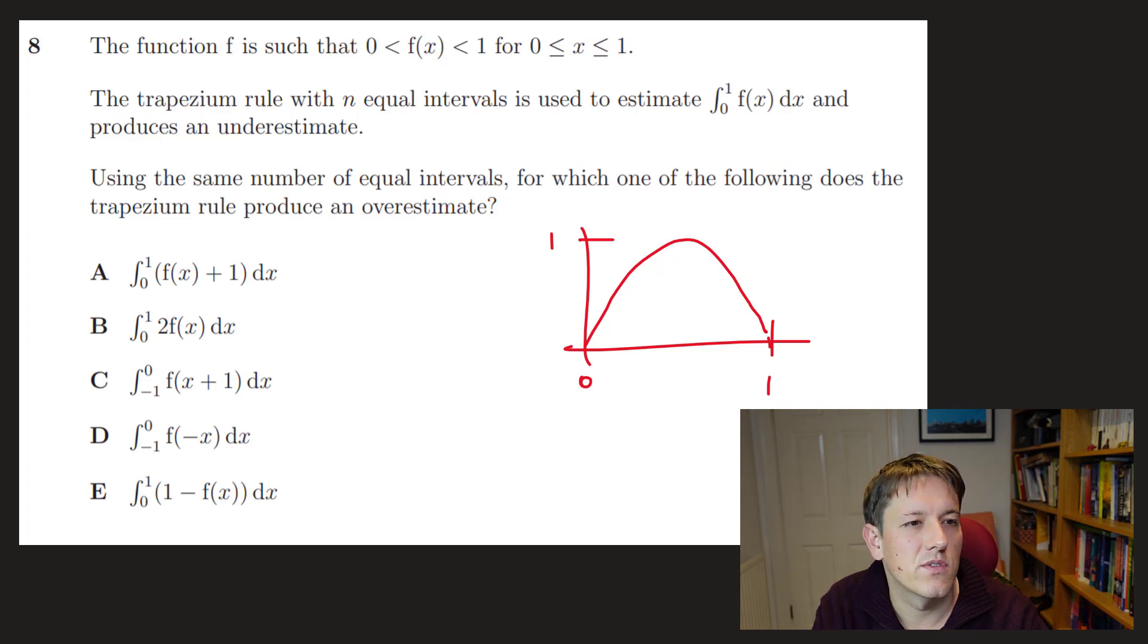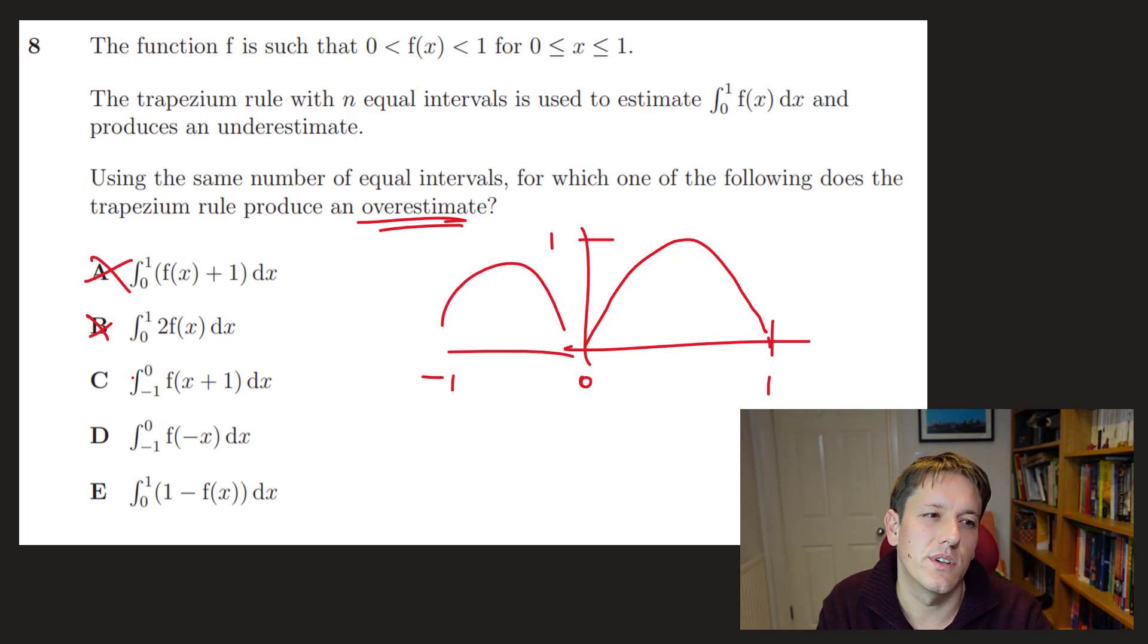Well, if I integrate F of x plus 1, well, that's just like that. That's still going to get an underestimate. So I'm looking for one that gives an overestimate. Remember, if I do 2 times F of x, that's still going to give an underestimate. And if I do the integral between 0 and 1 of F of x plus 1, sorry, and minus 1 and 0, well, okay, so F of x plus 1 is just going to be this shifted to the left. And it'll be between minus 1 and 0. So it's the same area, basically, same trapezium rule.